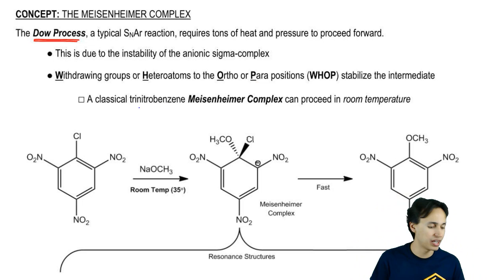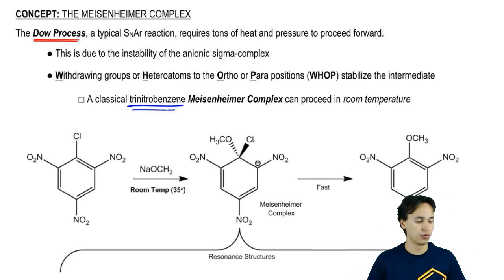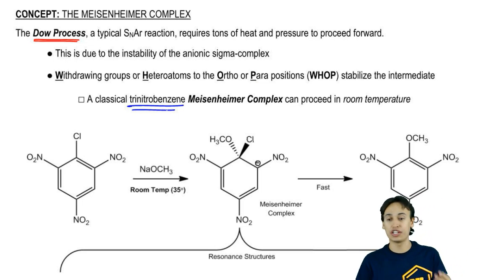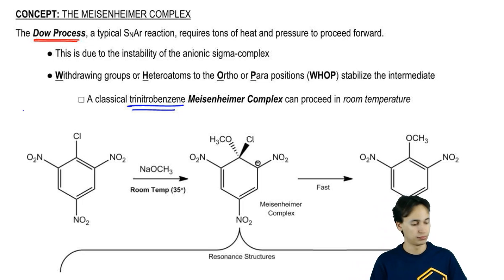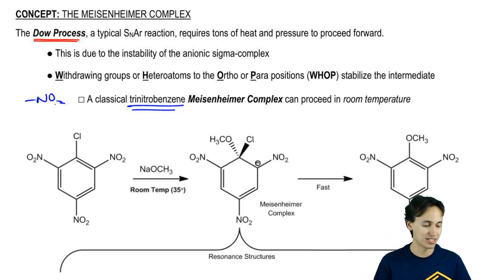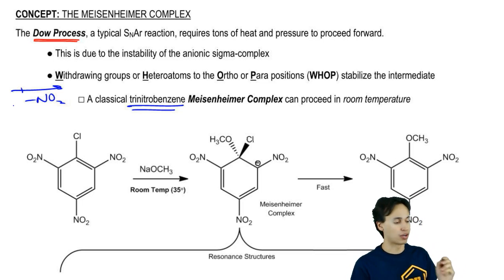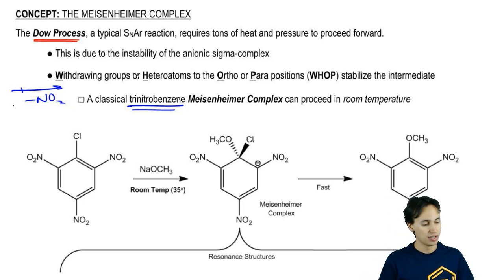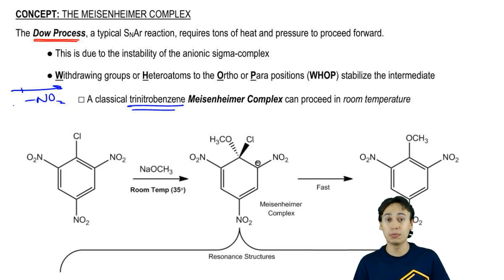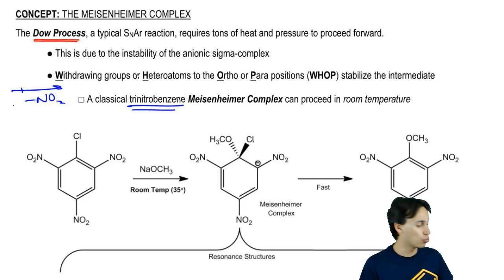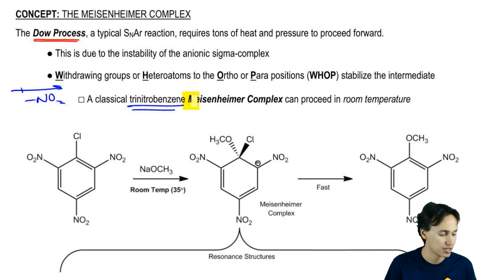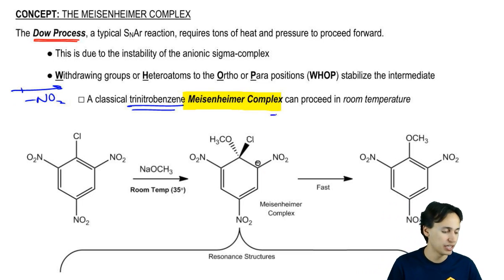A classical trinitrobenzene — think about it: is nitro a good withdrawing group? It's the best — one of the best electron withdrawing groups. If you use a trinitrobenzene Meisenheimer complex, the reaction can actually proceed forward at room temperature. So what is a Meisenheimer complex? A Meisenheimer complex is just what I'm saying — a WAP.